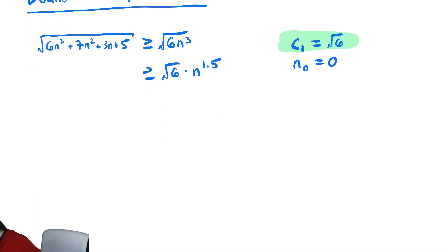So, my final conclusion is the given function, radical 6n cubed plus 7n squared plus 3n plus 5, is in theta of n to the 1.5. And maybe we highlight that just to showcase it to the reader.